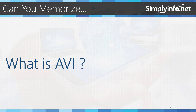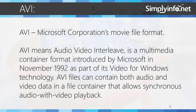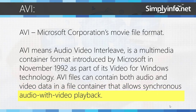So can you memorize what is AVI? AVI, Microsoft Corporation's Movie File Format, means Audio Video Interleave. It is a multimedia container format introduced by Microsoft in November 1992 as part of its Video for Windows technology. AVI files can contain both audio and video data in a file container that allows synchronous audio with video playback.